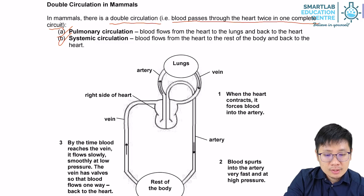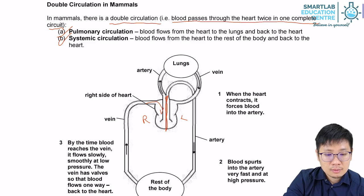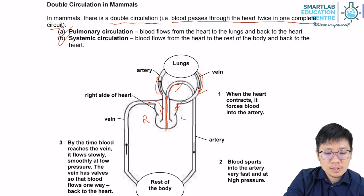From here we can see a simplified diagram. The wall in the middle divides the left and the right side. The right side is for pumping deoxygenated blood from the rest of the body into the lungs. The lungs give oxygen to the blood, and the blood goes back to the heart. The left side of the heart then pumps the oxygenated blood out of the heart and into the rest of the body. The rest of the body uses up the oxygen, and the blood goes back to the heart.